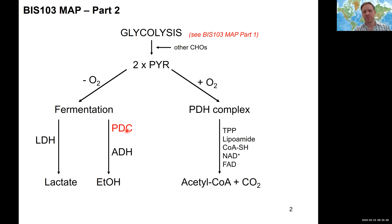Last lecture we talked about what happens to pyruvate in the presence of oxygen. We spent much of the lecture discussing the PDH — pyruvate dehydrogenase complex — converting two molecules of pyruvate into acetyl-CoA and carbon dioxide. We discussed how this mechanism works using five different cofactors: TPP (thiamine pyrophosphate), lipoamide, CoA-SH, NAD, and FAD.